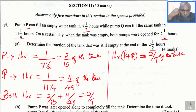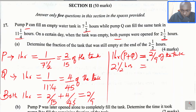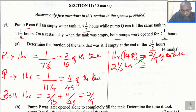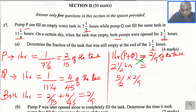What about in 2 and a half hours? Because both pumps were opened for 2 and a half hours. We just need to cross multiply: 2 and a half, which is the same as 5 over 2, multiplied by 2 over 9, divided by 1. This gives 5 over 9 of the tank.